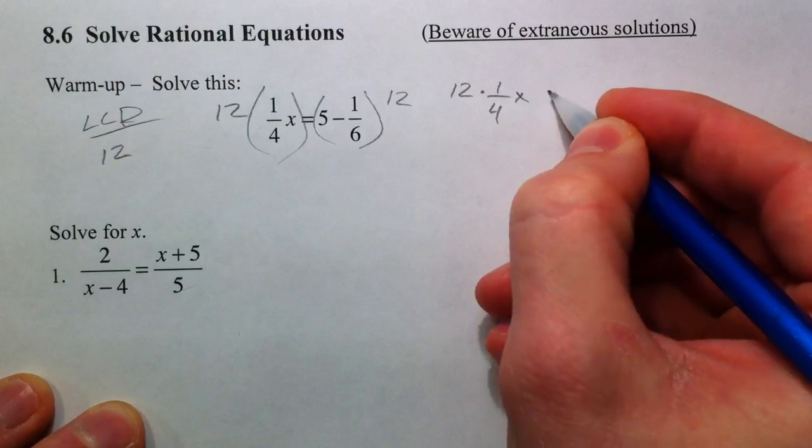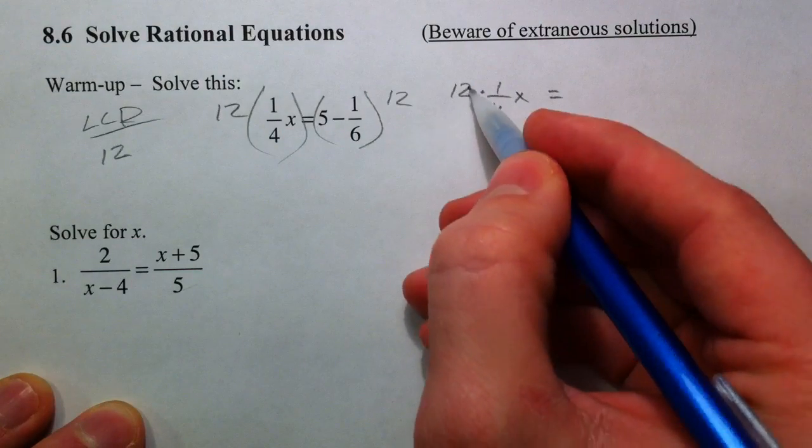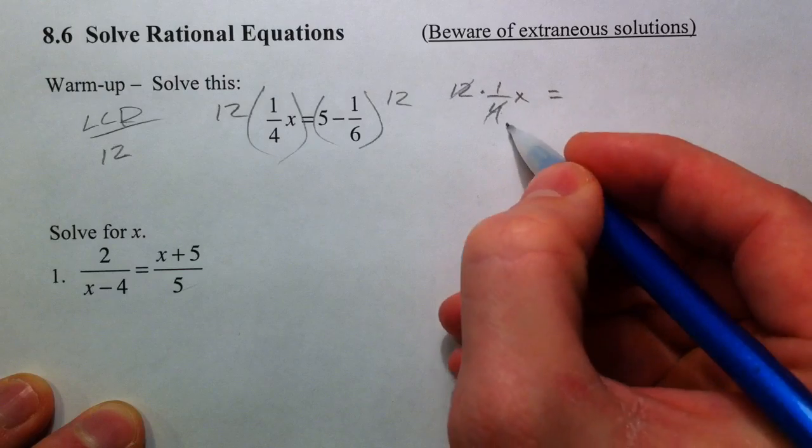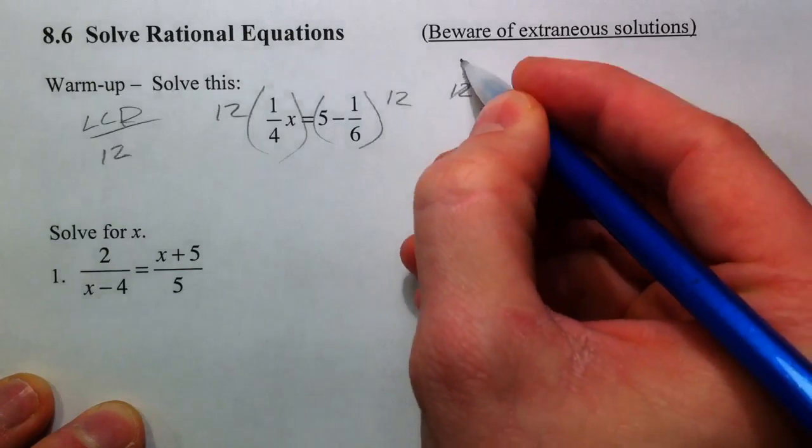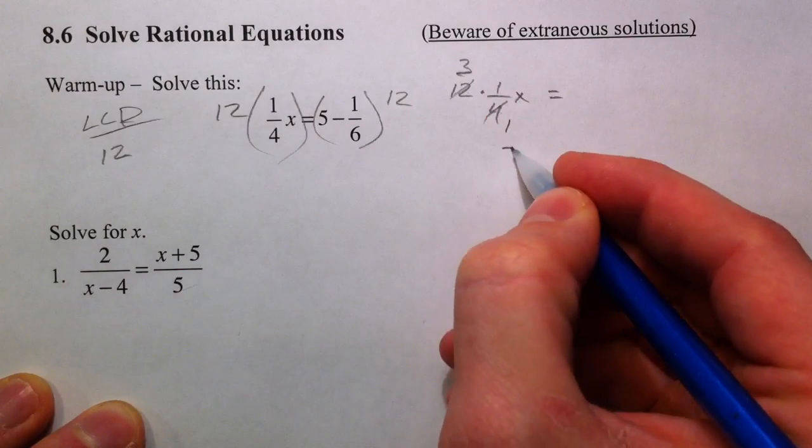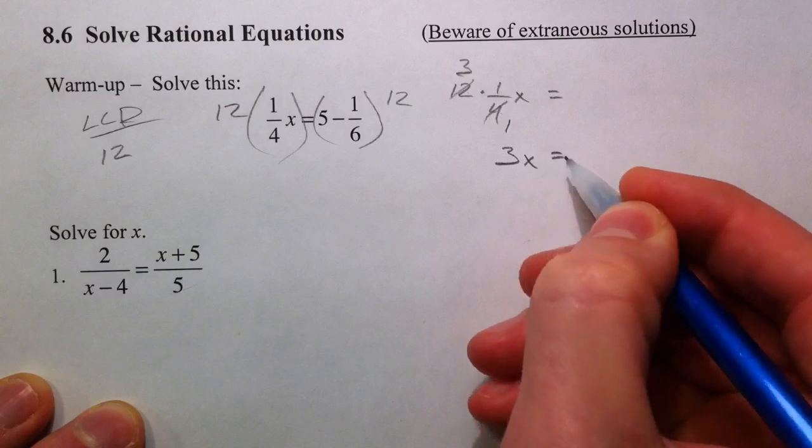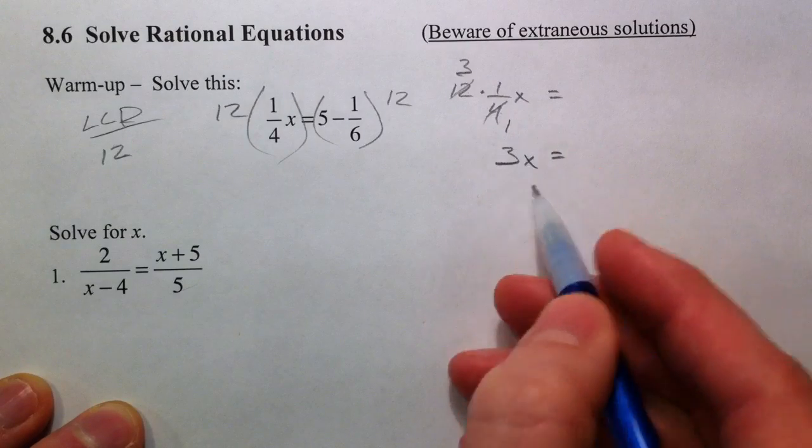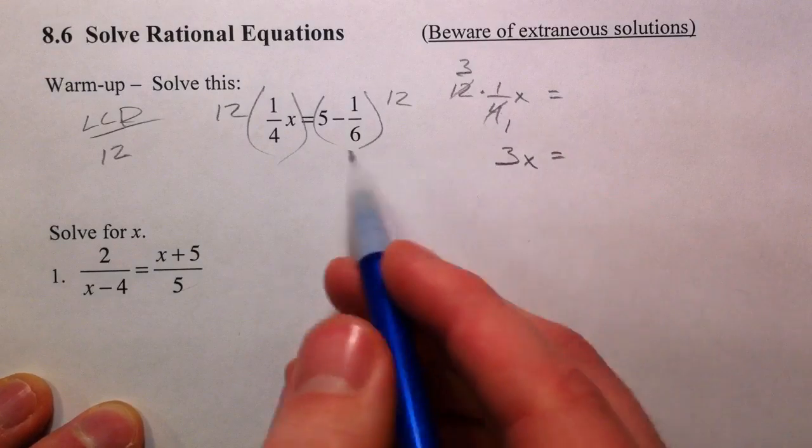On the left-hand side you're left with just 3x, 3x over 1 if you want, but we killed the fraction so it's gone. This 12 gets multiplied by both of these, so we get 5 times 12 which is 60.